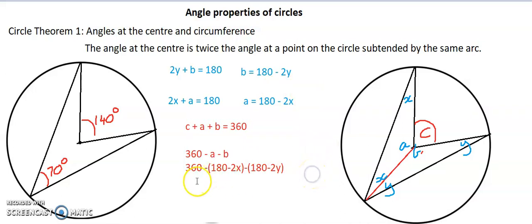I'm going to get it out of those brackets. That means the negative in front of the 180 is take away 180. The negative and the negative is a positive, so it's +2x. Then I've got a negative and a positive is a negative, so I'm taking away 180, and a negative and a negative is a positive, so I've got +2y. So the 360 - 180 - 180 that cancels out and it just leaves me with 2x + 2y.